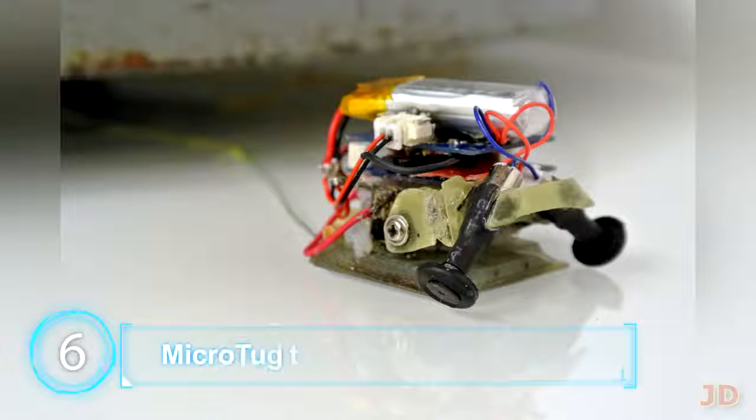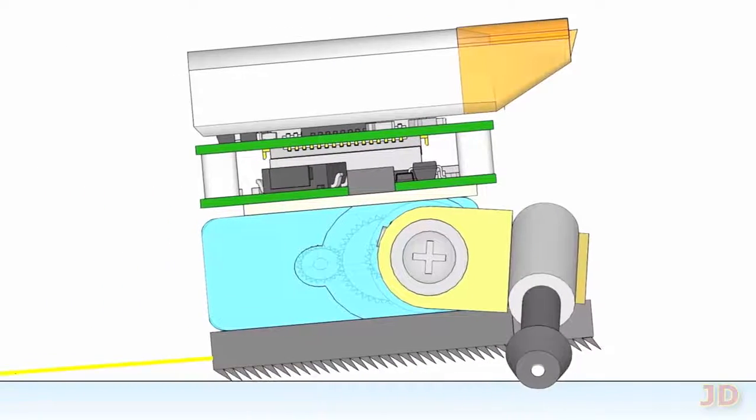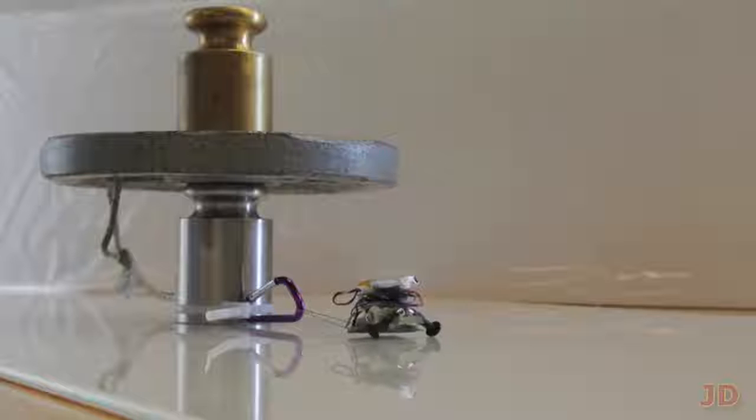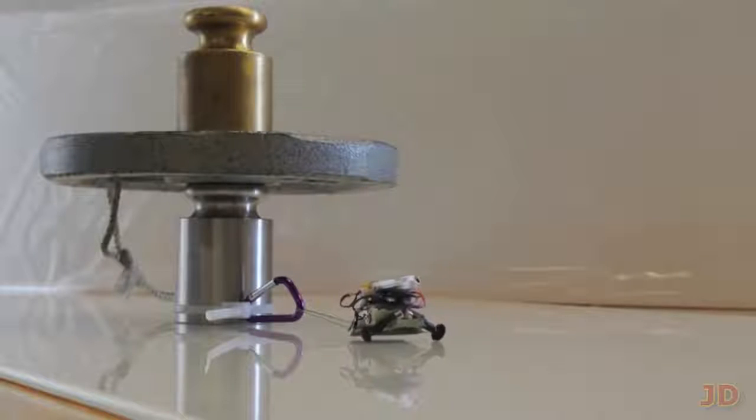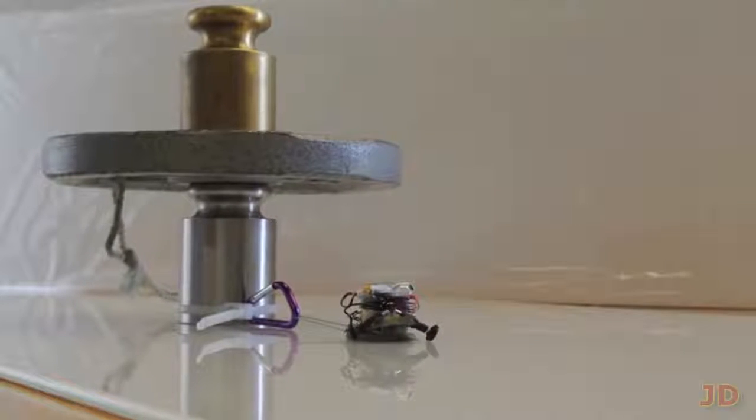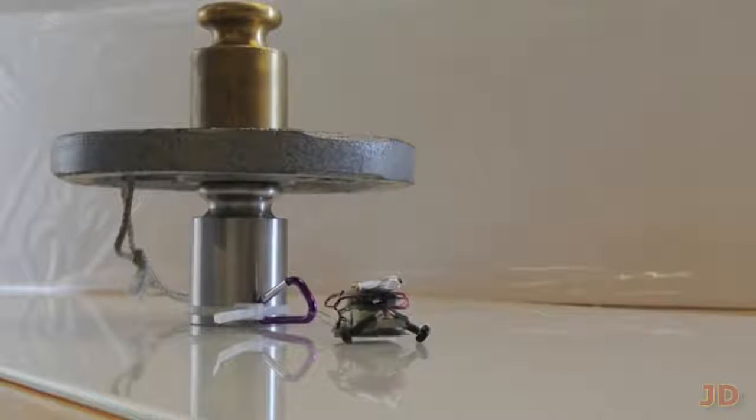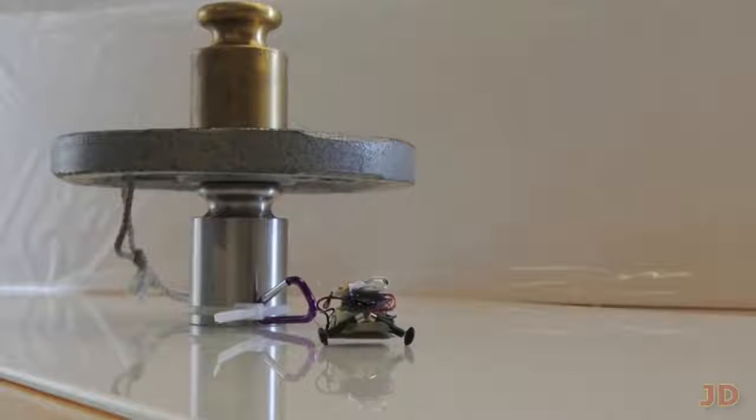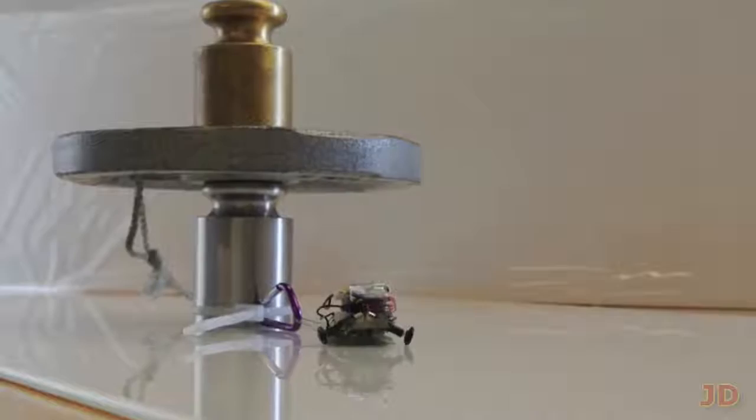At number 6, Micro Tug. Built by Stanford University, this bot is ultra-strong and mobile and can tow objects over 2,000 times its own weight. It uses micro-cohesive hairs so that it can even pull objects up walls. That's pretty impressive considering that's kind of like a human pulling 200 tons. One day, powerful micro-tugs can find jobs lifting heavy loads in factories or even construction sites.